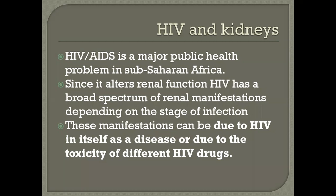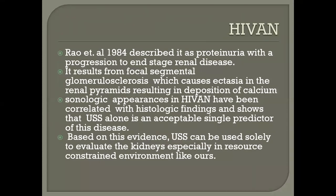We need to appreciate that the manifestations can be due to HIV itself as a disease, or due to the drugs that patients will be taking that might cause cellular disruption of the renal cells. According to Rao et al. in 1984, HIV-1 was described as proteinuria with a progression to end-stage renal disease. It results from focal segmental glomerular sclerosis, which causes ectasia of renal pyramids resulting in deposition of calcium. Sonologic appearances in HIV-1 have been correlated with histologic findings, showing that ultrasound alone is an acceptable single predictor of this disease.